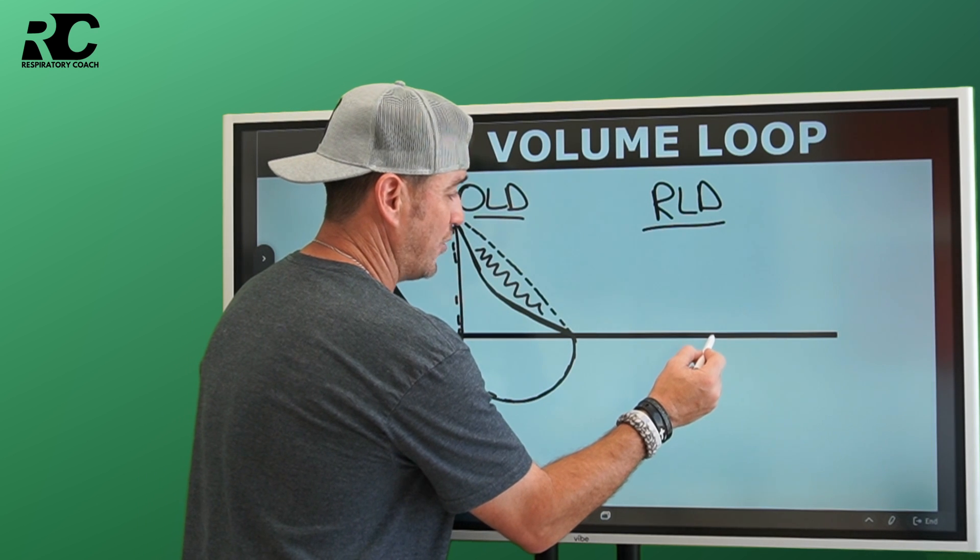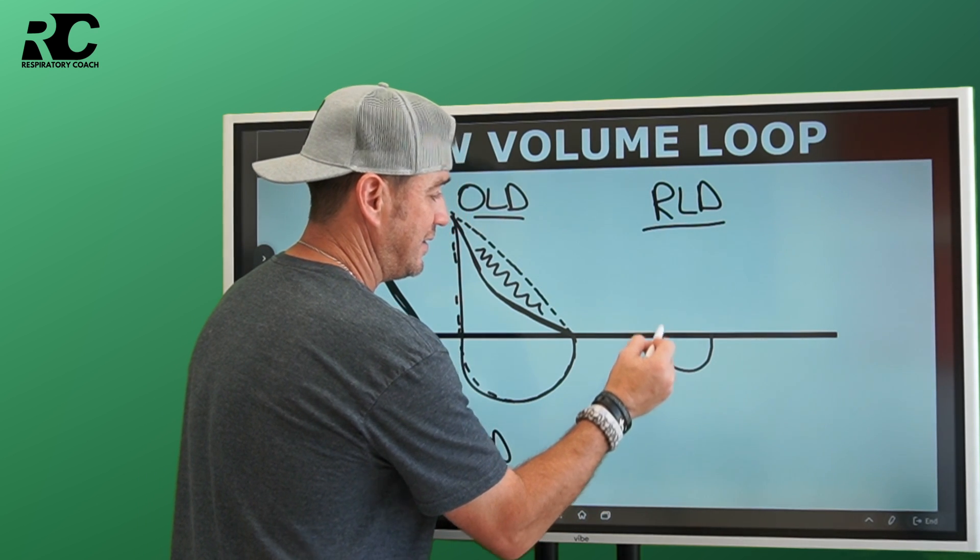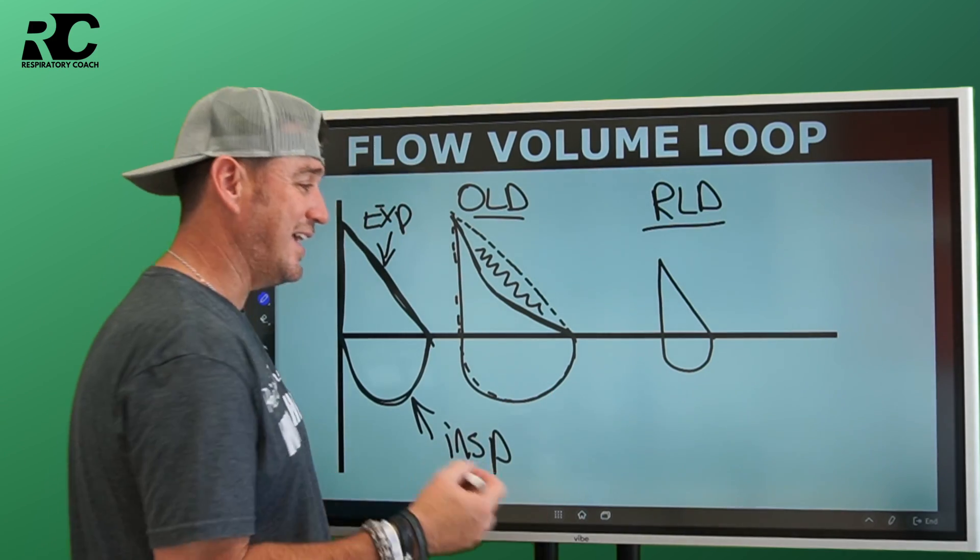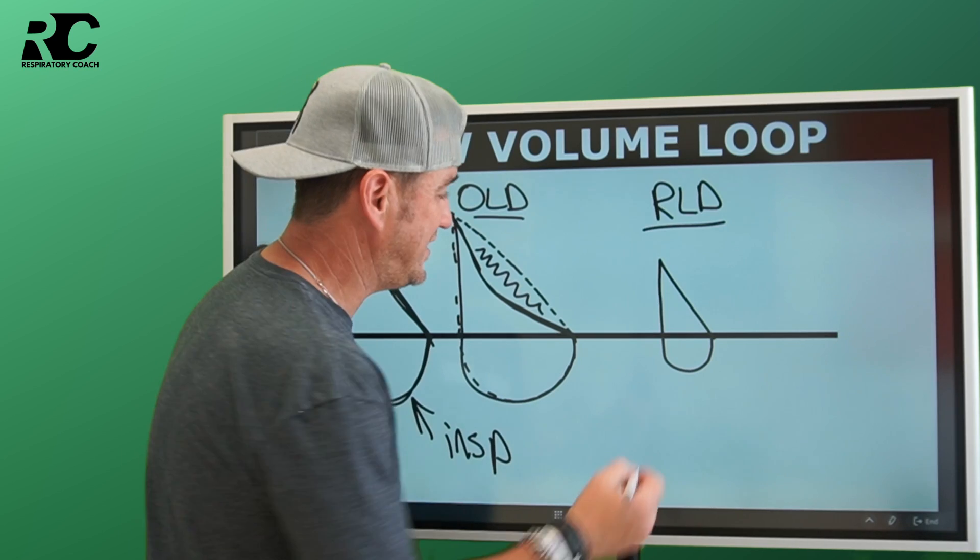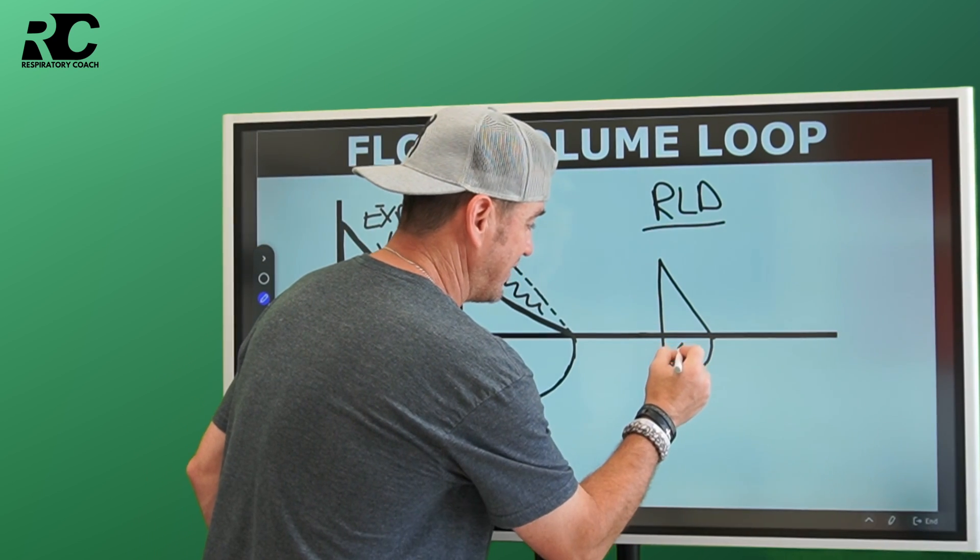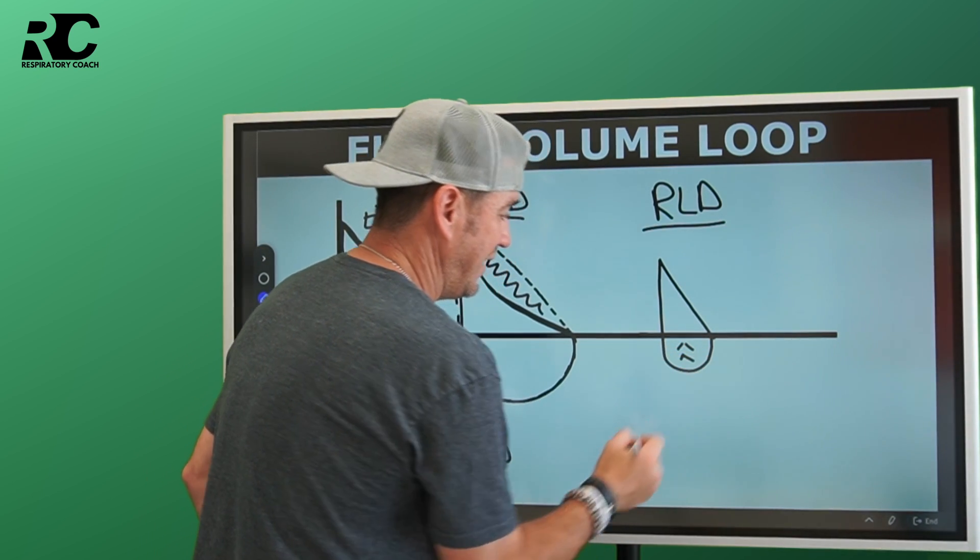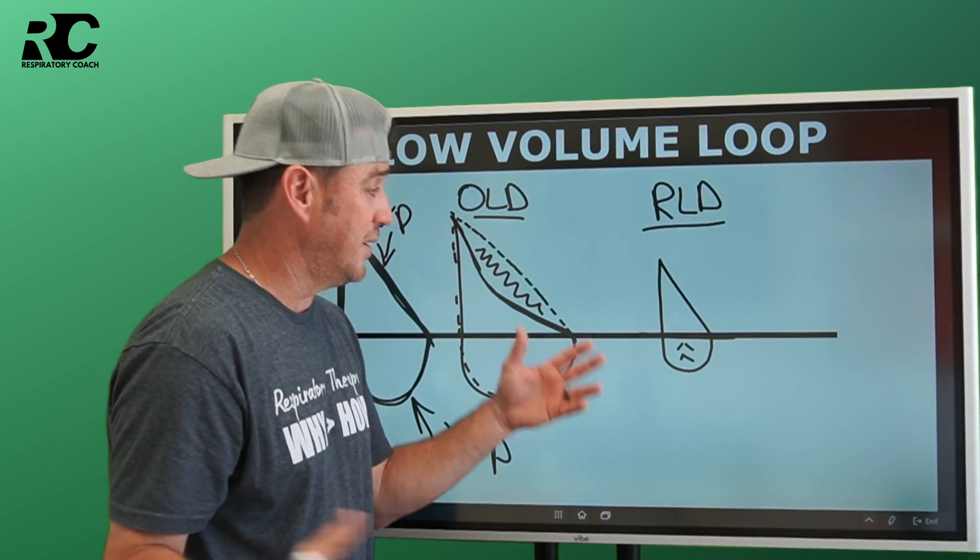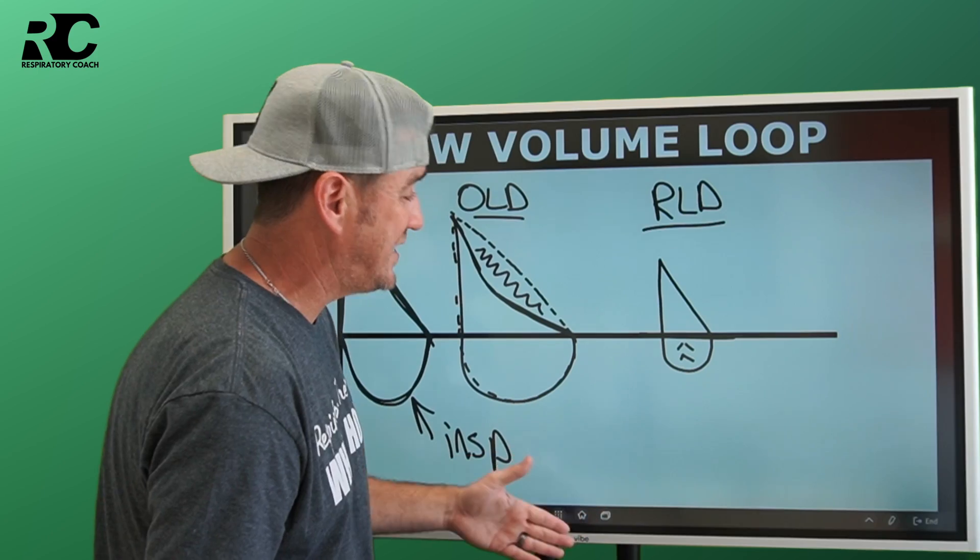We all learn this early on in our respiratory educational process. We learn restricted to volume, obstructed to flow. Obstructive patients have a hard time getting air out. Restrictive patients have a hard time getting volume in. Their volumes are much lower due to their decrease in compliance. When we think about a restrictive lung disease, we would see something more like this. That's what it would look like. Some people say that it looks like a witch's hat.